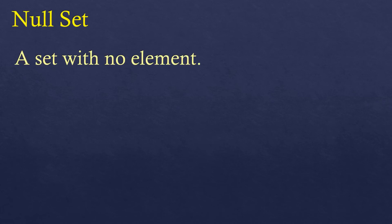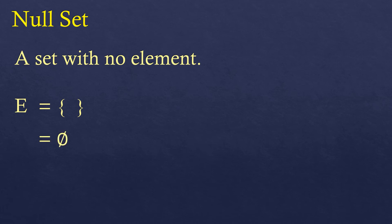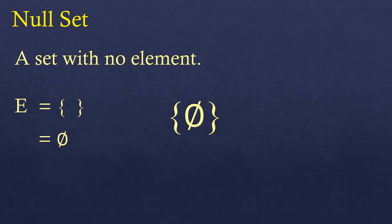Now let's move to null set. A null set is a set with no element — it is possible for a set to have no element. For example, set E can be written as just a brace with nothing inside, meaning it's a null set. Or you can write it as a zero with a diagonal slash. That means it's a null set or empty set. But you cannot combine the two by placing the slash-zero symbol inside braces — that would mean a set with one element, which is the null set symbol itself, not an empty set. Just choose either notation.